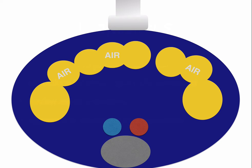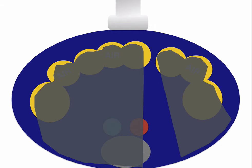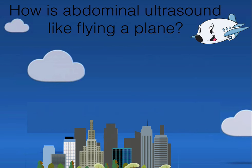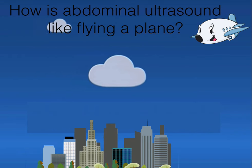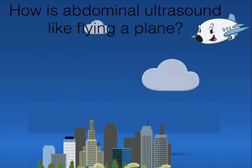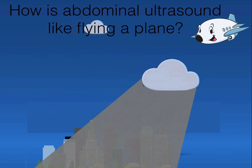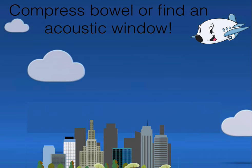Before we get to anatomy, let's first talk about a common limitation to any abdominal ultrasound application, and that is bowel gas. The air molecules will scatter ultrasound waves so that nothing is visualized deep to the bowel gas. Only solid organs or fluid-filled structures allow sound waves to pass through — these are called acoustic windows because they let the sound through. This is like flying a plane and not being able to see structures below cloud cover; if you fly over a break in the clouds, you can see below — that's like using an acoustic window.